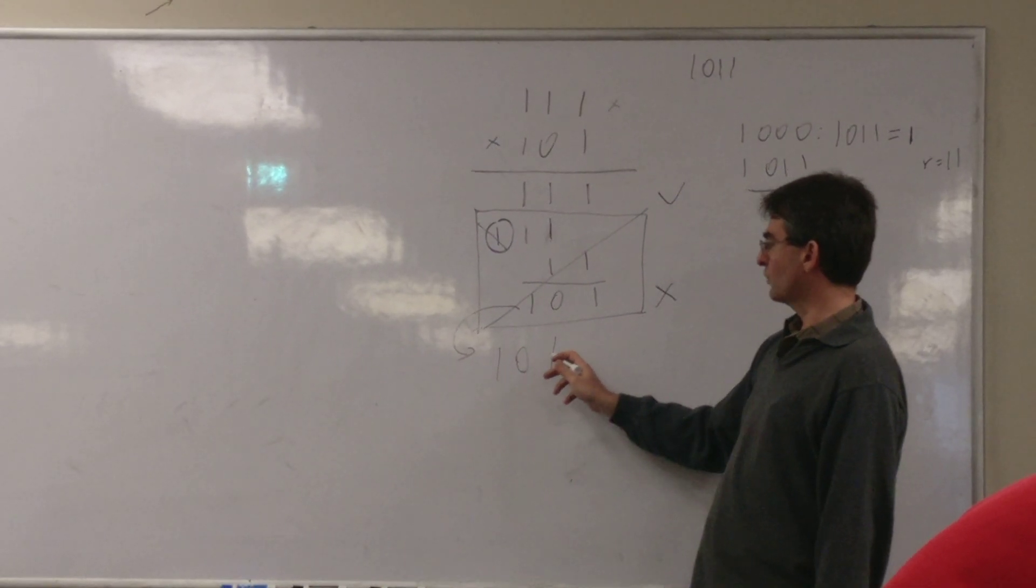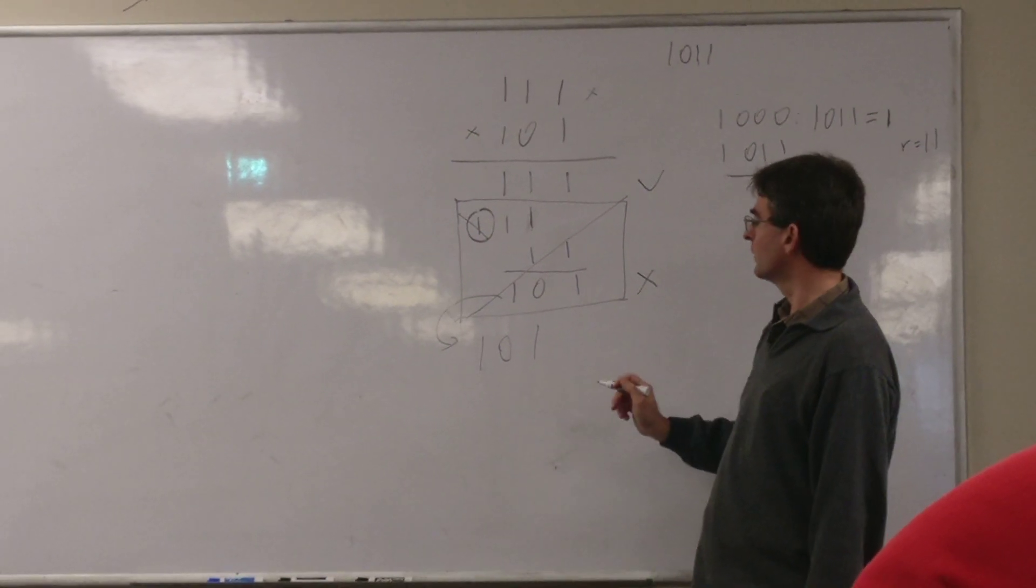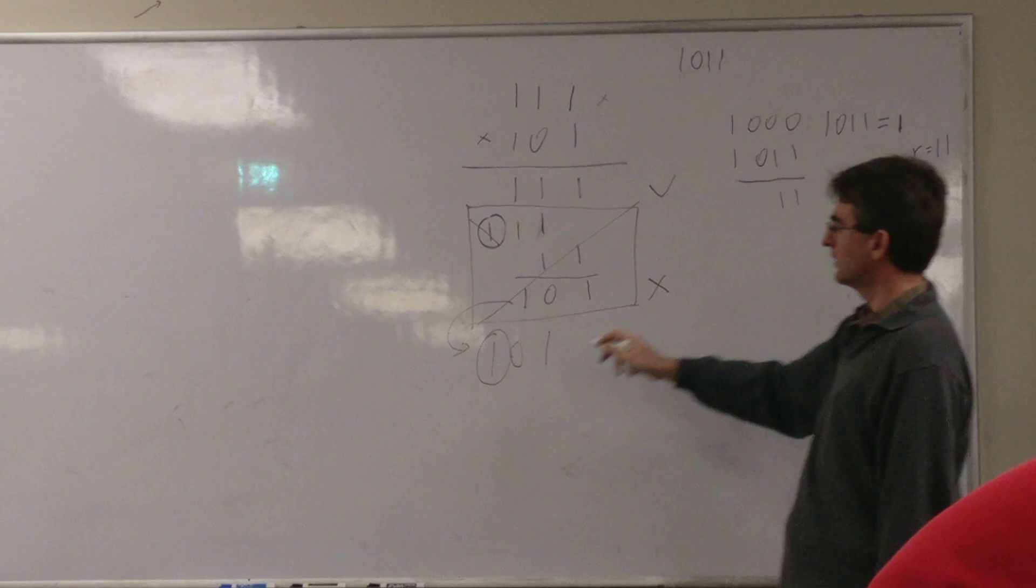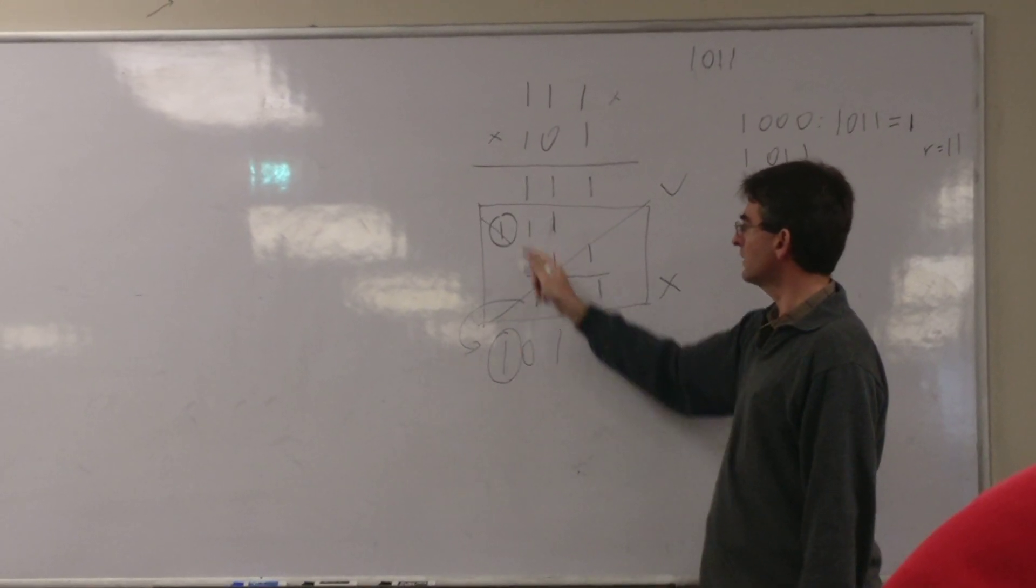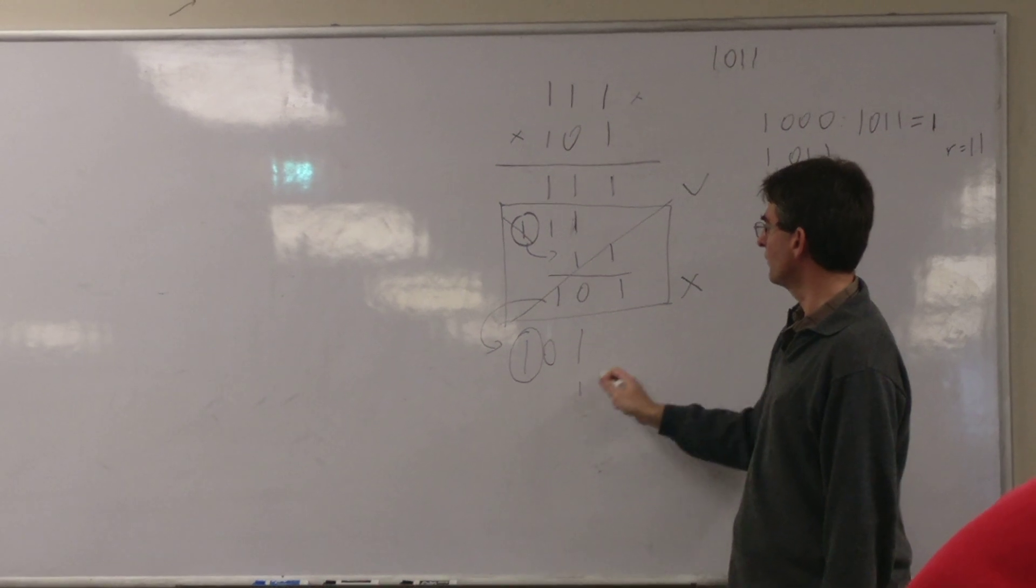This becomes x cubed plus x squared plus x squared plus x. This one again reduces according to the same mechanism as earlier. So I'm going to replace this again with 1.